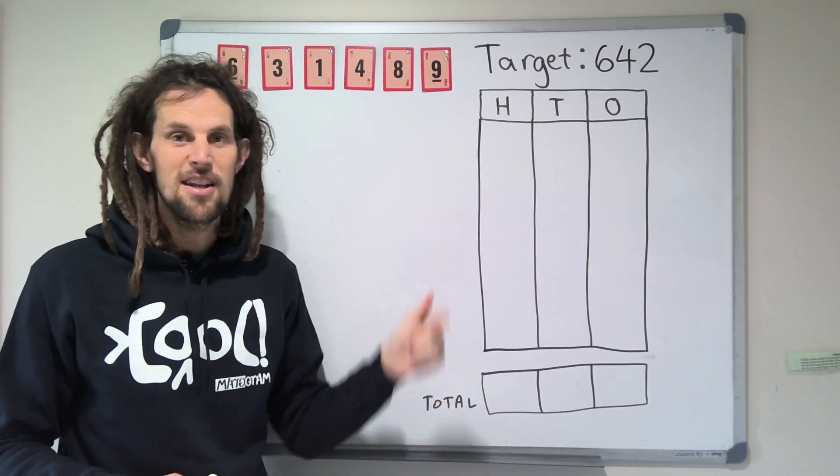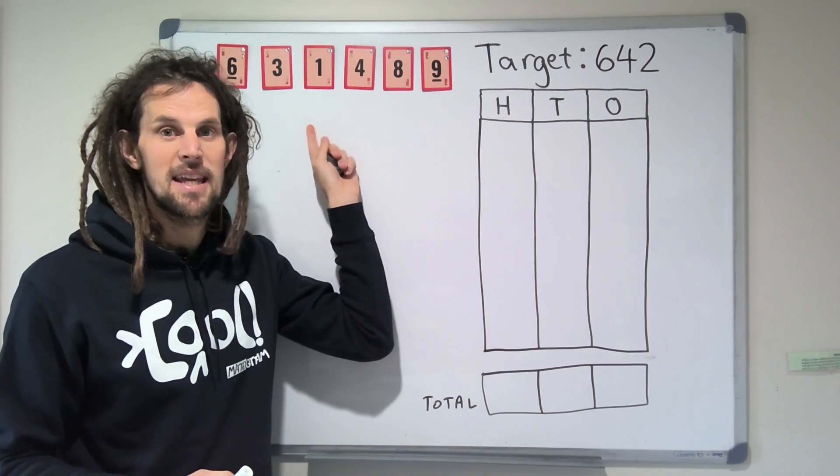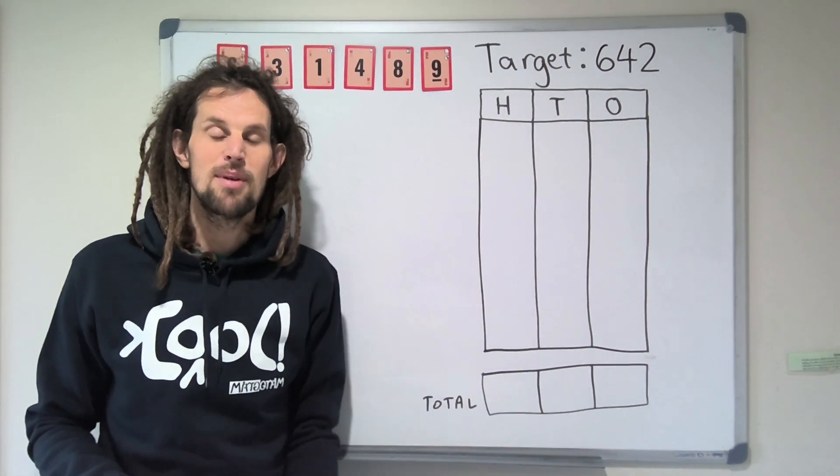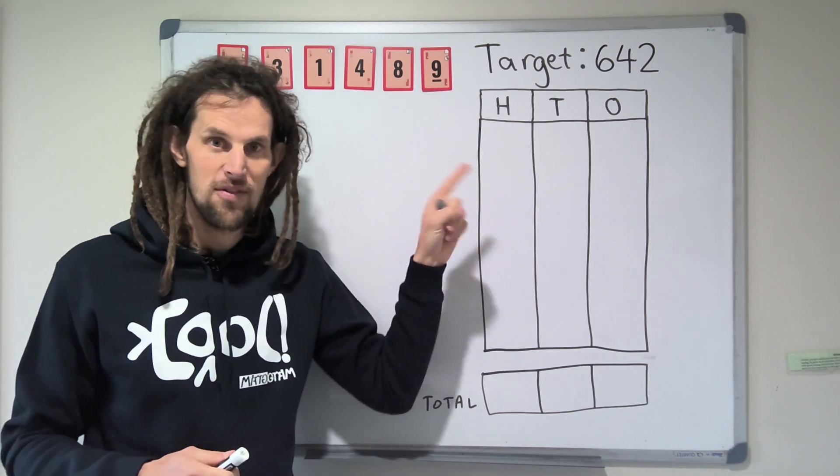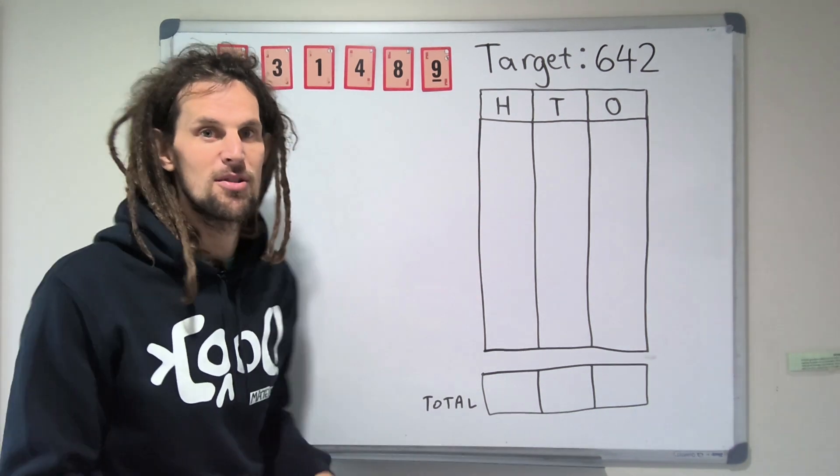Now the really cool thing about this is that no matter which 6 numbers you pick here, and no matter which target number you pick, it's almost always certainly going to be you can get within 4 of that number. So let's just go and demonstrate here.